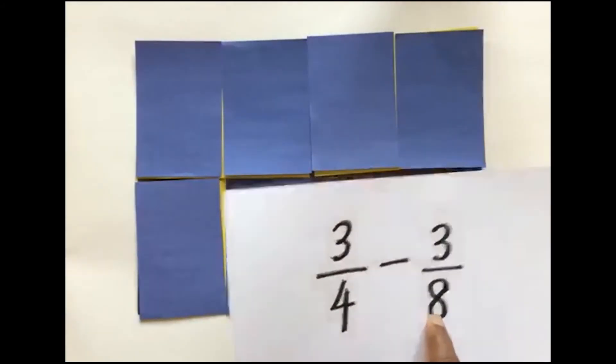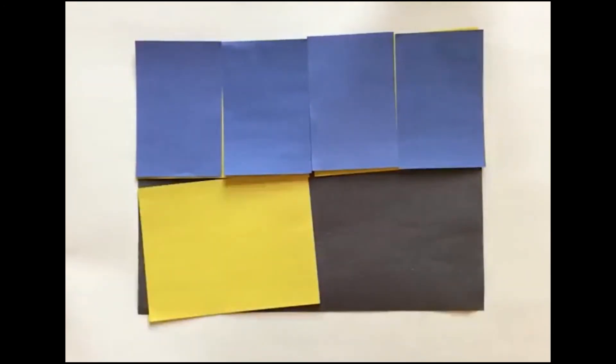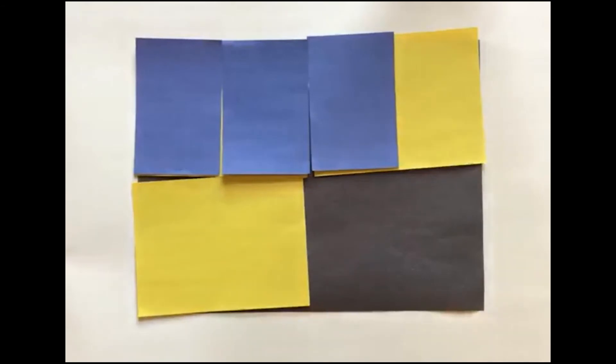Now you can see I need to remove 3 eighths from 3 fourths. Remove 1 eighth, 2 eighths and 3 eighths. As you can see, what is left will be my answer. 1 eighth, 2 eighths, 3 eighths will be my answer.